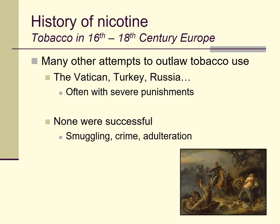A number of other countries, including the Vatican, Turkey, and Russia, at different points during this time period, made similar attempts to outlaw tobacco use for either religious or perceived health purposes. Some of these attempts at prohibition were backed up with very severe punishments — imprisonment, mutilation, or even death for using or selling tobacco. But despite these strict laws, there was very little success in actually prohibiting tobacco use. In countries where prohibition was attempted, familiar problems associated with the illegality of drugs appeared: crime, especially smuggling, which has a very long history, and also the adulteration of tobacco — mixing it with non-tobacco products to increase volume and profits for smugglers and dealers.